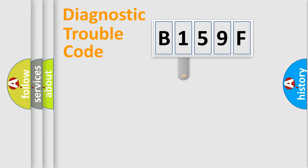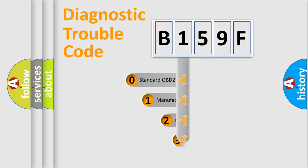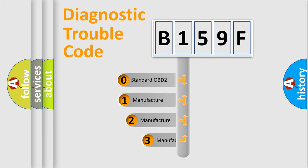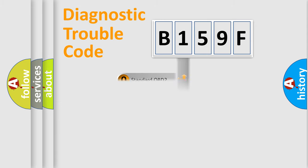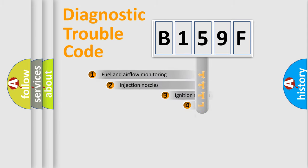This distribution is defined in the first character of the code. If the second character is expressed as zero, it is a standardized error. In the case of numbers 1, 2, or 3, it is a more manufacturer-specific expression of the car-specific error.